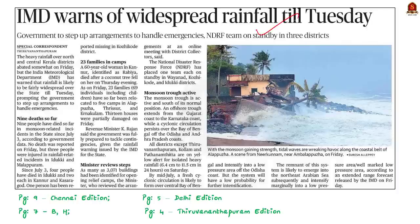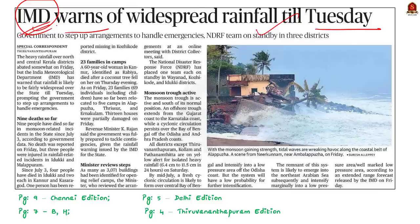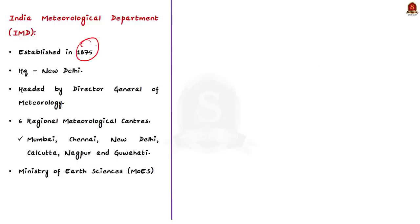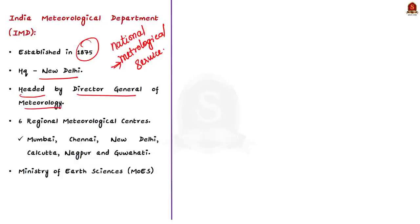Now, have a look at this next news article. The Indian Meteorological Department (IMD) warned that rainfall is likely to be fairly widespread over Kerala till Tuesday, prompting the state government to take adequate precautionary measures. In this context, let's see some points about the IMD. The IMD was established in 1875 and is the national meteorological service of the country — the principal government agency in all matters relating to meteorology. It is headquartered in New Delhi, headed by the Director General of Meteorology, with six regional meteorological centers at Mumbai, Chennai, New Delhi, Kolkata, Nagpur and Guwahati. Importantly, IMD is under the Ministry of Earth Sciences.